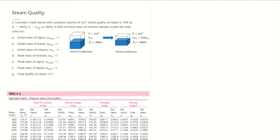Let's solve this problem. We have a tank with a constant volume of 2 cubic meters. The initial quality of steam is 10% or 0.1 at a pressure of 3 MPa. So T1 is equal to T-saturation at 3 MPa. The condition is that 40% of the initial mass of the mixture remains after the final condition.